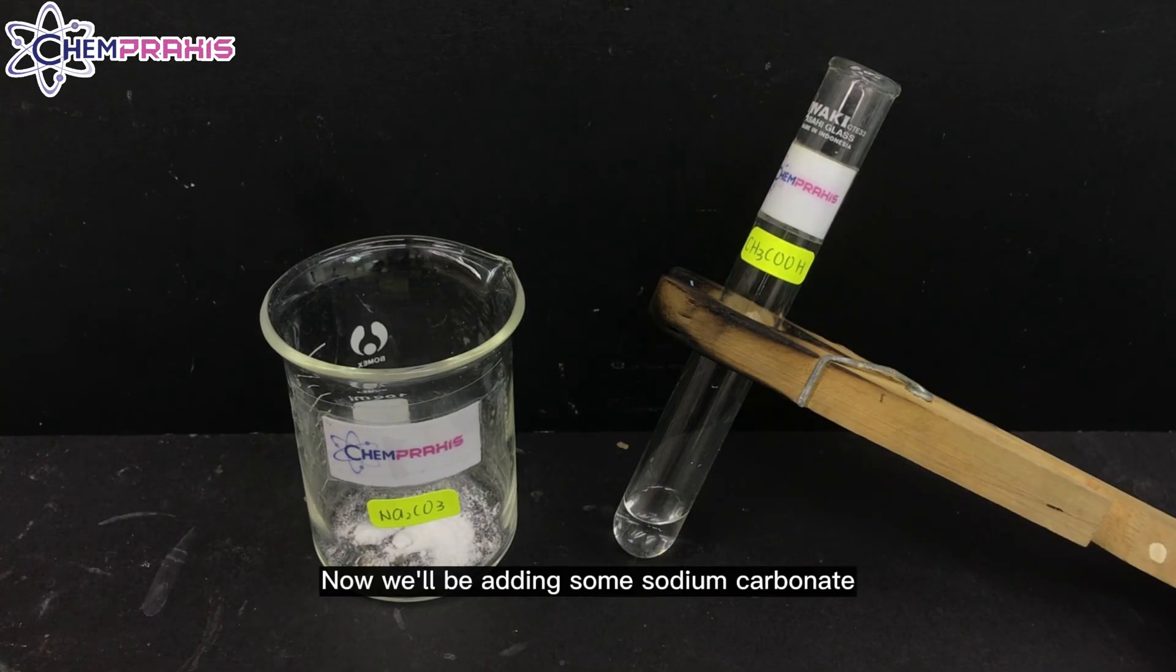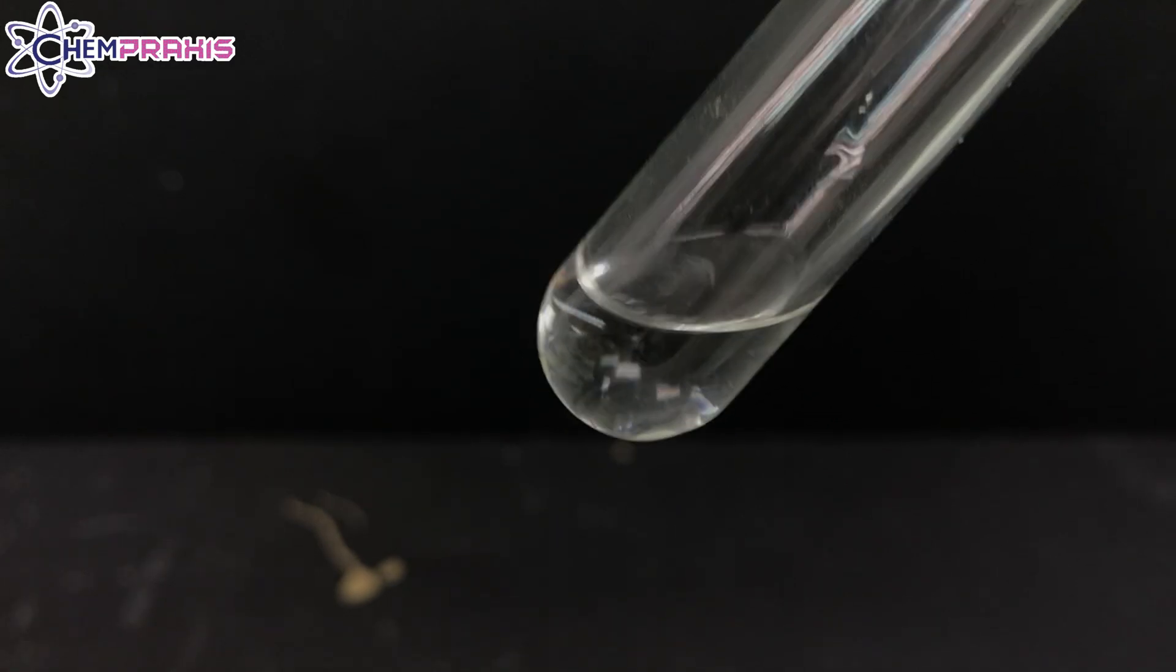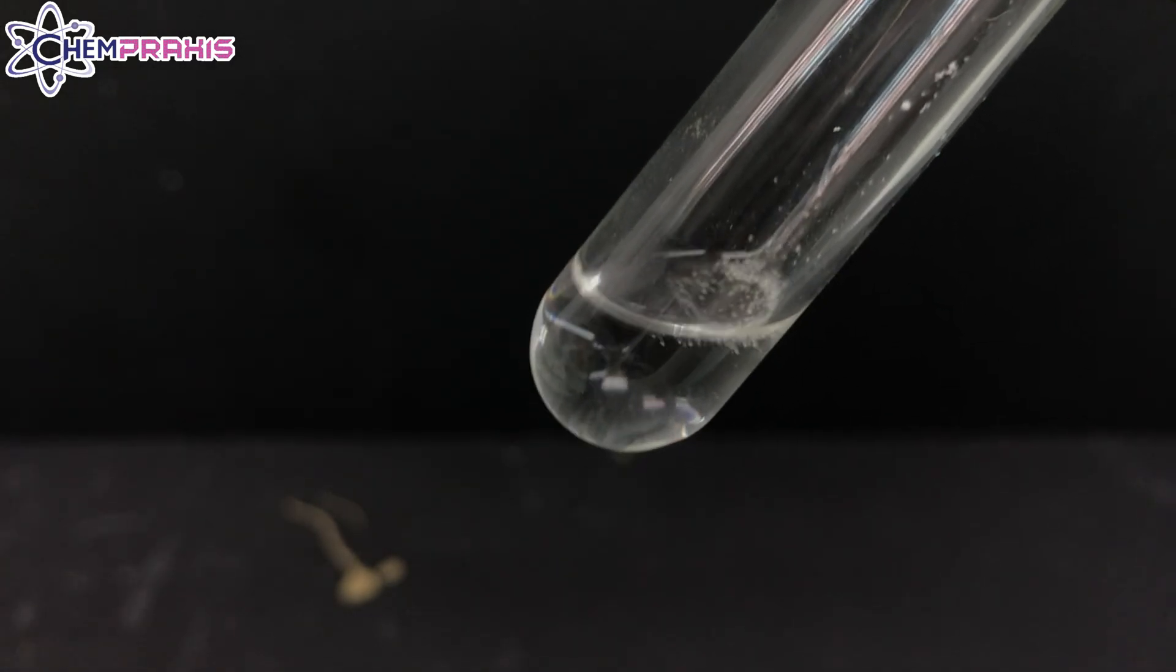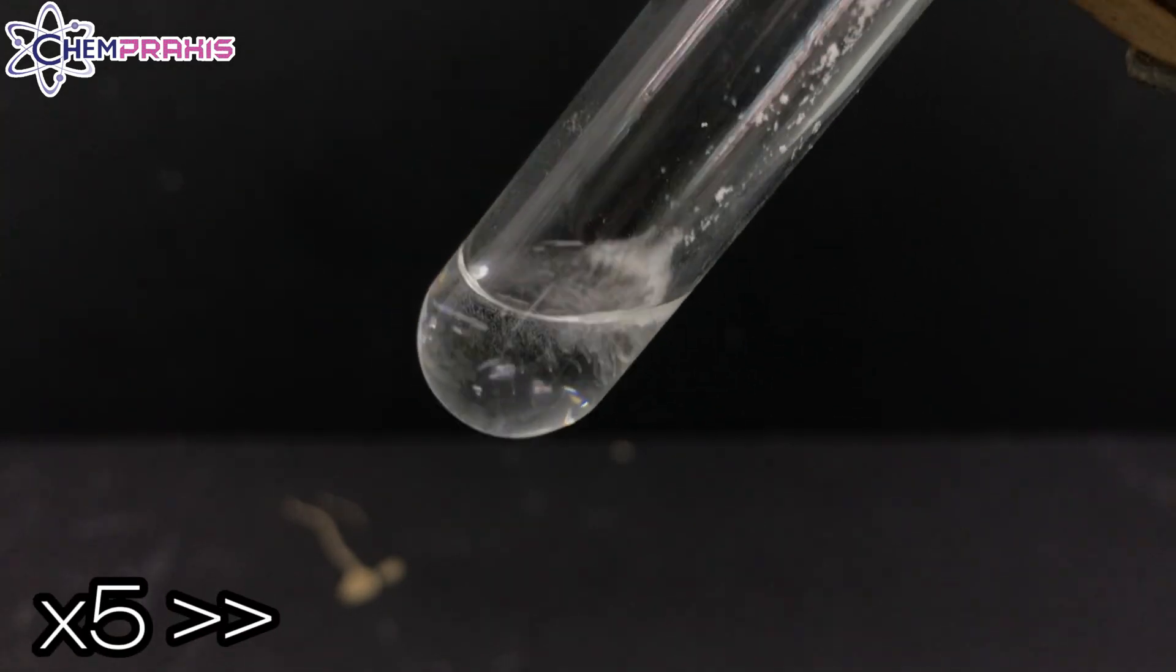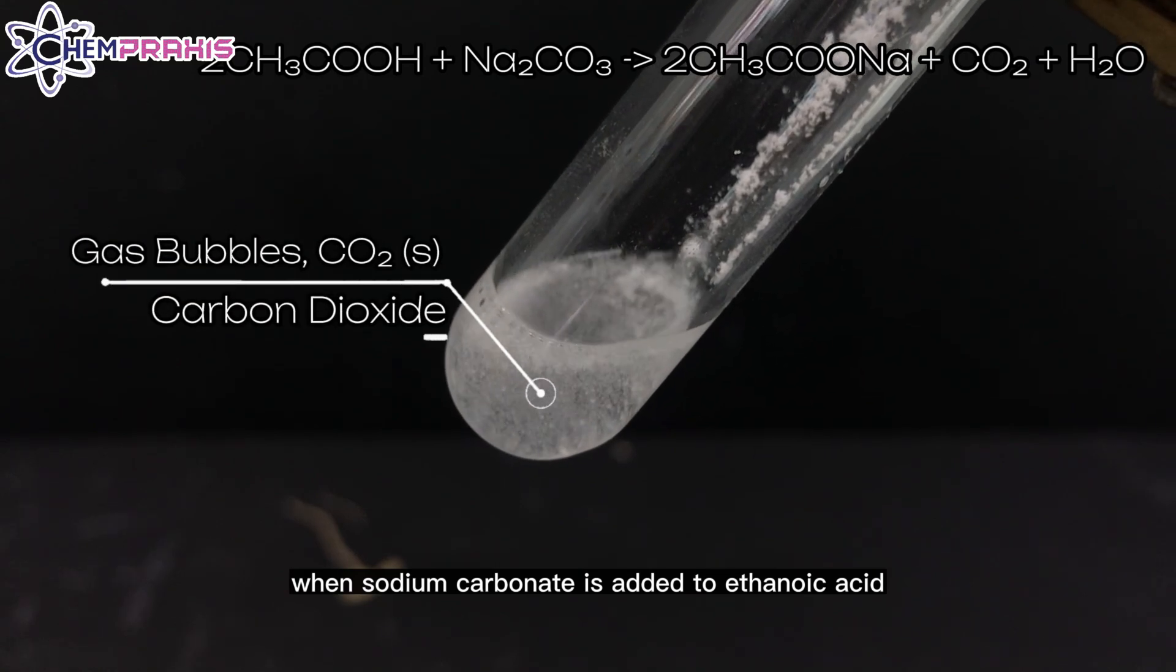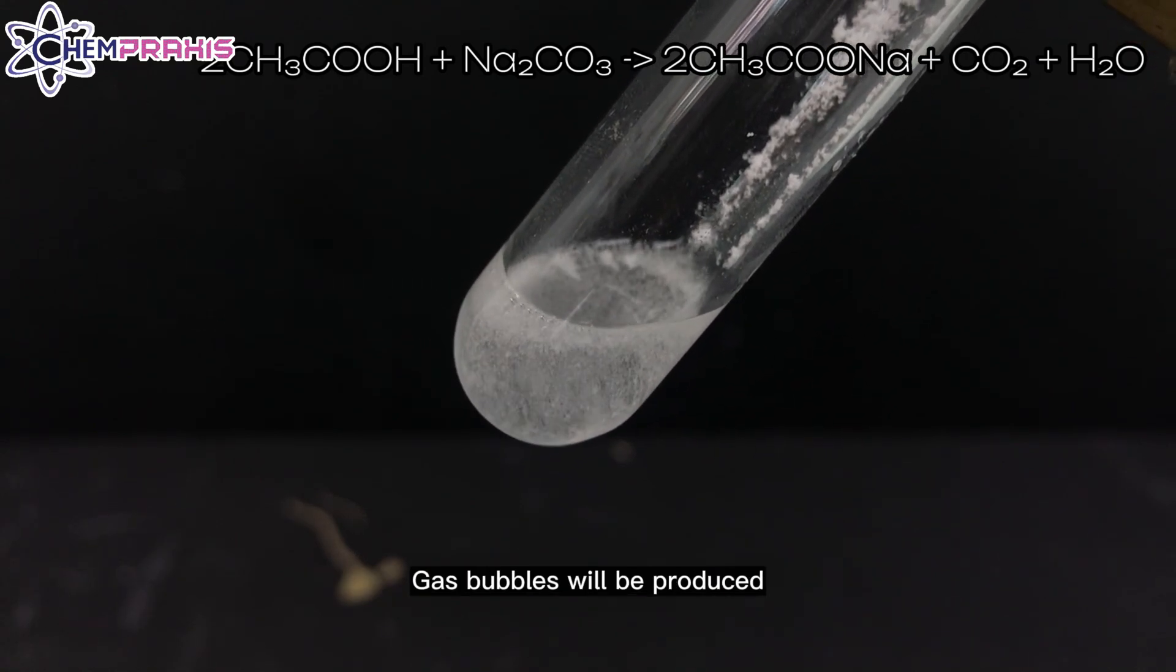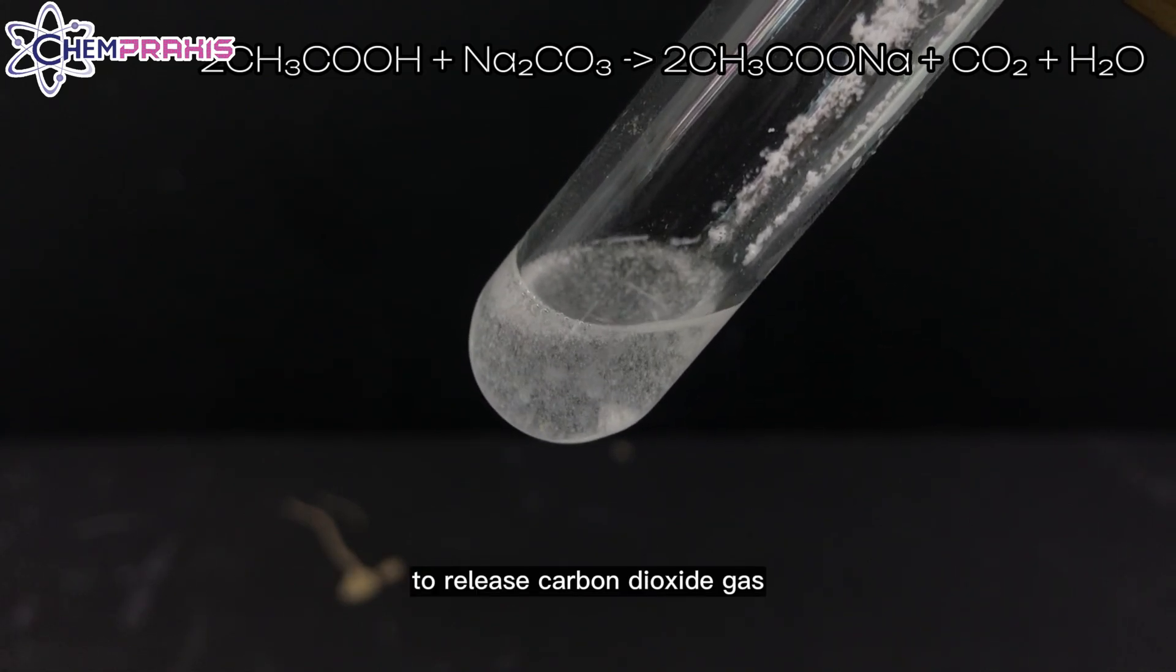Now, we'll be adding some sodium carbonate into the ethanoic acid. When sodium carbonate is added to ethanoic acid, gas bubbles will be produced. The sodium carbonate reacts with the acid to release carbon dioxide gas.